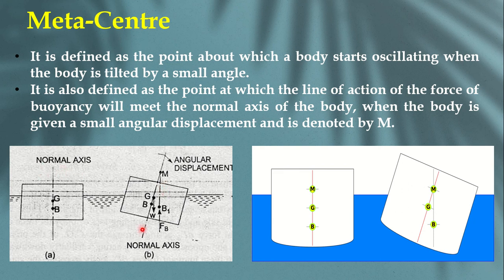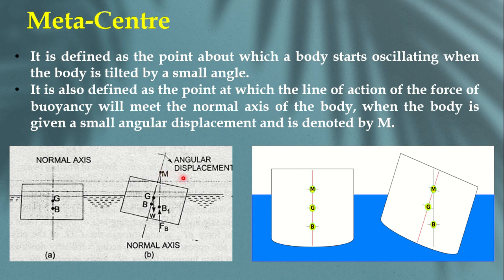Give the body a small tilt and release it. The body starts oscillating — the liquid beneath exerts buoyancy force. From the center of buoyancy, draw a line upward; where this line meets the normal axis of the body, that point is the meta center. The meta center is the point where the line of action of the force of buoyancy and the normal axis of the body meet.